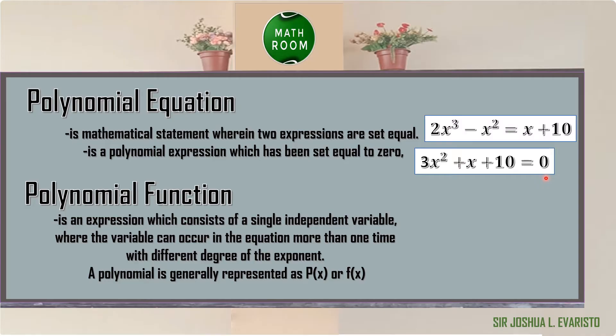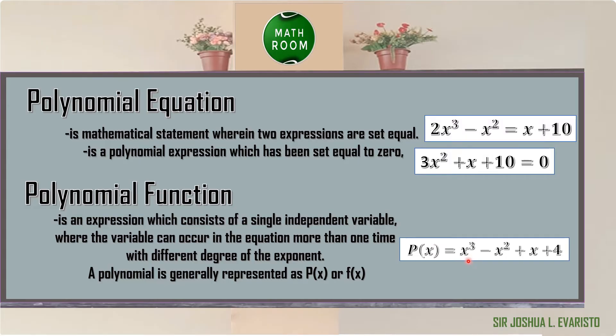For today, we will be talking about polynomial functions. By definition, a polynomial function is an expression consisting of a single independent variable where the variable can occur more than one time with different degrees of the exponent. A polynomial is generally represented as p(x) or f(x). For example, p(x) = x³ − x² + x + 4, where the single independent variable x occurs in different degrees: degree 3, degree 2, and degree 1.